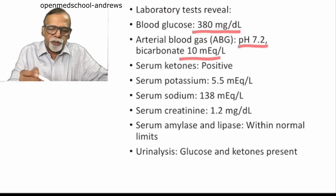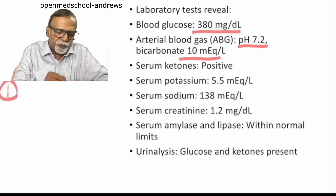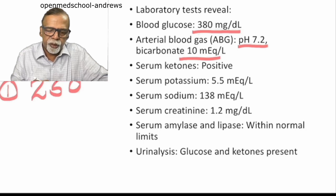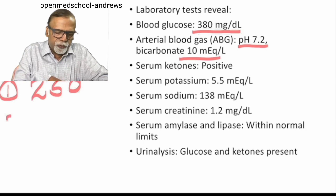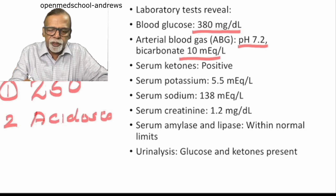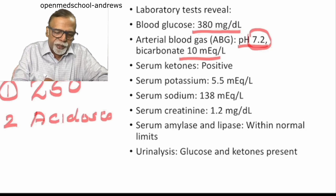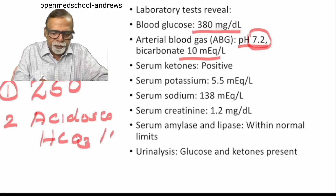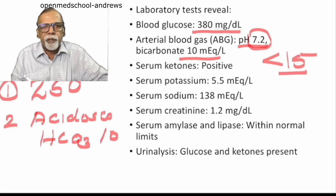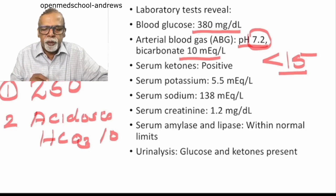Looking at the investigation results: blood sugar is 380 mg/dL. One of the criteria for diabetic ketoacidosis is hyperglycemia — blood sugar more than 250. Here there is unequivocal hyperglycemia. His ABG shows acidosis with a pH less than 7.35; here it is 7.2, so there is definite acidosis. Bicarbonate is 10; bicarbonate less than 15 is consistent with acidosis. As the bicarbonate has decreased, this is a type of metabolic acidosis.